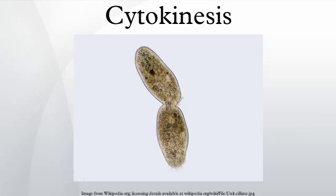Continued hydrolysis causes this cleavage furrow to ingress, a striking process that is clearly visible through a light microscope. Ingression continues until a so-called mid-body structure is formed, and the process of abscission then physically cleaves this mid-body into two. After cytokinesis, non-kinetochore microtubules reorganize and disappear into a new cytoskeleton as the cell cycle returns to interphase.